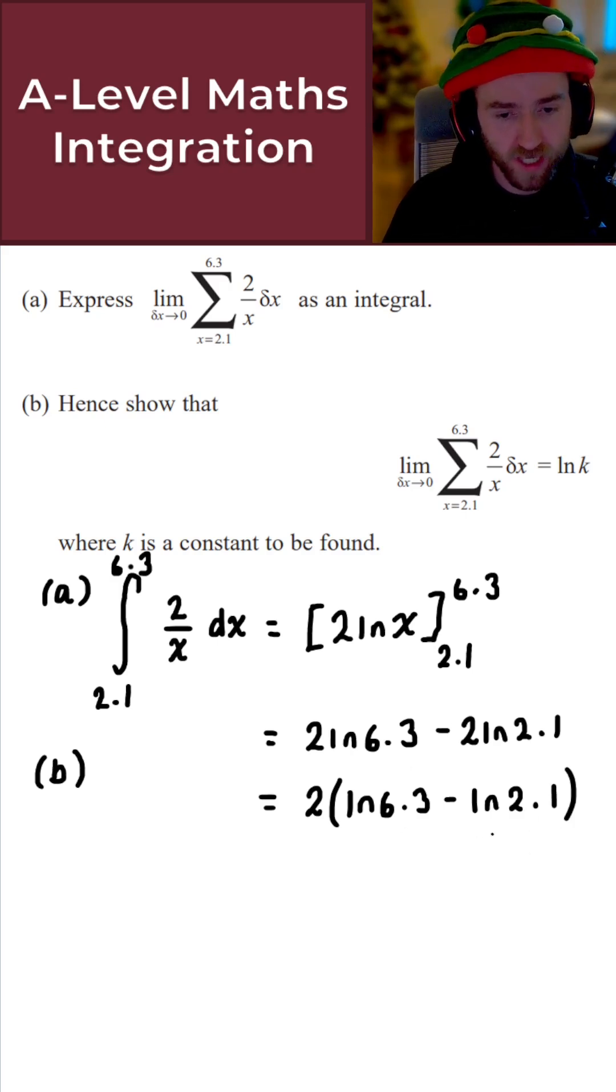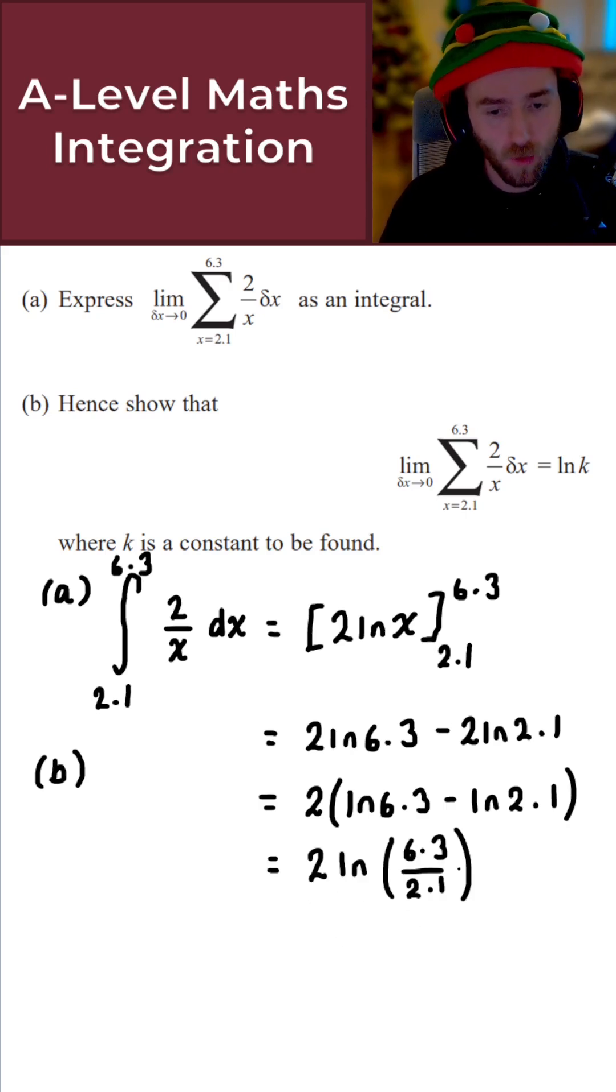Now because I've got a difference of logarithms where they both have the same base—they are natural logarithms—I can write this as a single logarithm. If we do that, we get 2 ln(6.3 over 2.1).